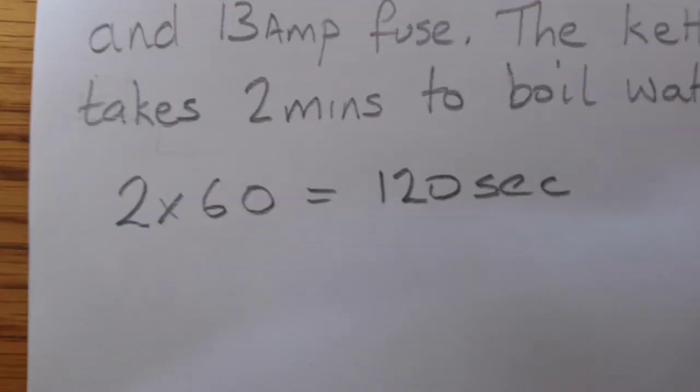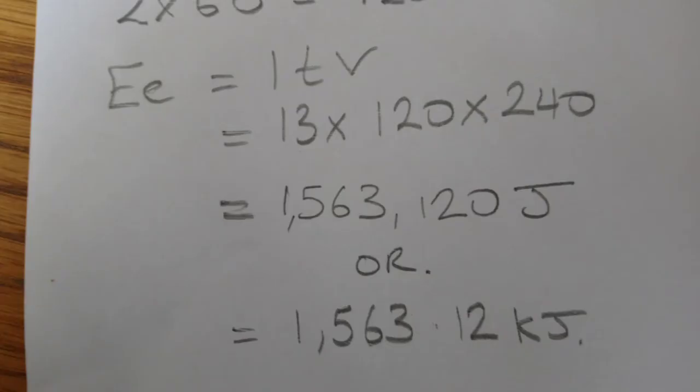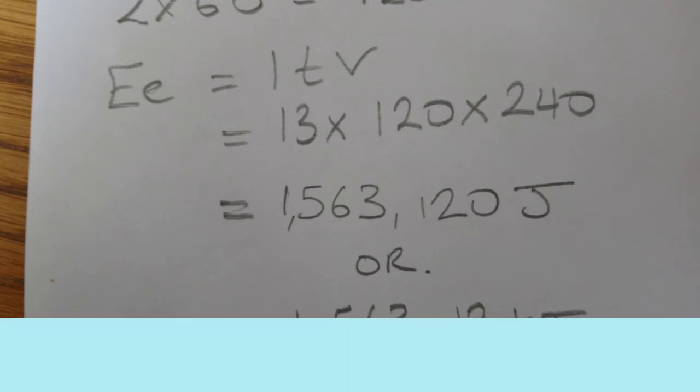To do that, you need to times the two minutes by 60. Then use the electrical energy formula: 13 times 120 times 240. It becomes a very big number, so you can whittle it down. This could have been 1.563 megajoules.